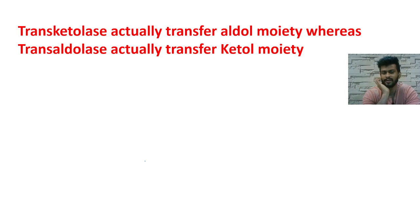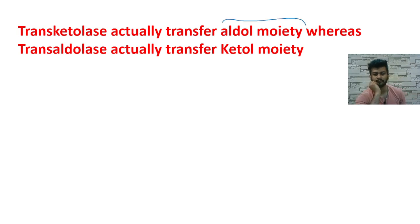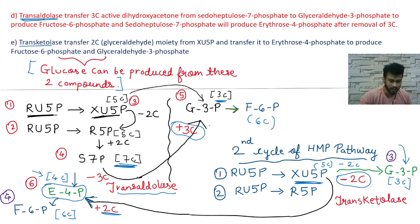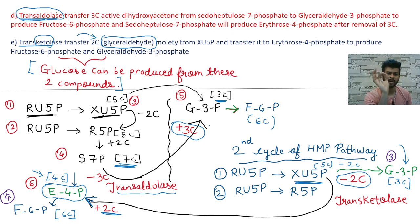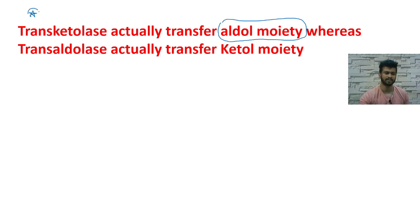An important exam point: as the name suggests, transketolase should transfer a ketol moiety, but it actually transfers an aldol moiety — glyceraldehyde. Conversely, transaldolase, as the name suggests, should transfer an aldol moiety, but it actually transfers a ketol moiety — dihydroxyacetone. This distinction can be directly asked in exams.